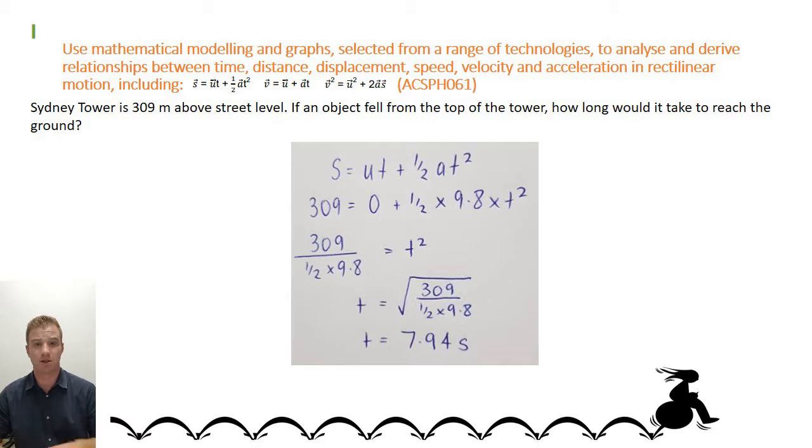Initial velocity is zero because it was stationary on top of that tower. And now you know half times gravity, which is acceleration 9.8, and the time is what we're trying to find. So you rearrange the equation to look like this: t equals the square root of 309 divided by half times gravity, and your time is 7.94 seconds.